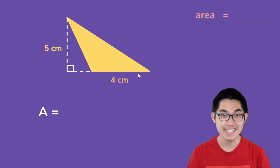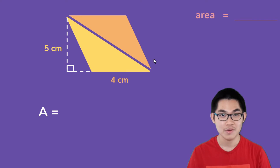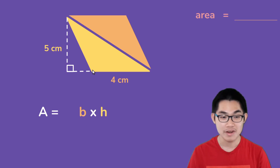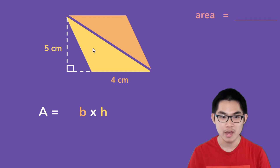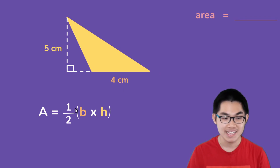Now, to find the area of this triangle, what I'm going to do is duplicate this triangle. So what shape do we have now? Well, it looks like we have a parallelogram. And if you watch my previous video, you know that the area of a parallelogram is the base times the height, where this is the base and this is the height. However, we want to find the area of the yellow triangle, and we know that the yellow triangle is half the area of the parallelogram, which is why the formula to find the area is one half times the base times the height.